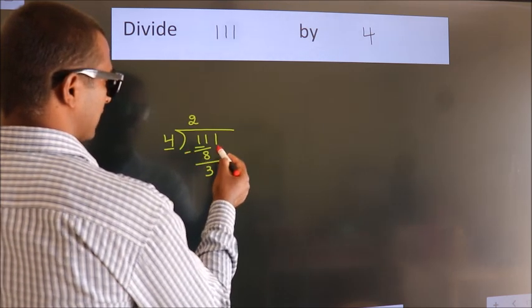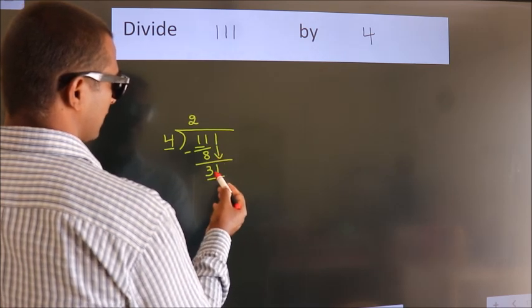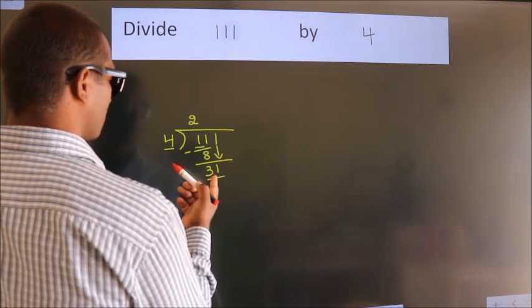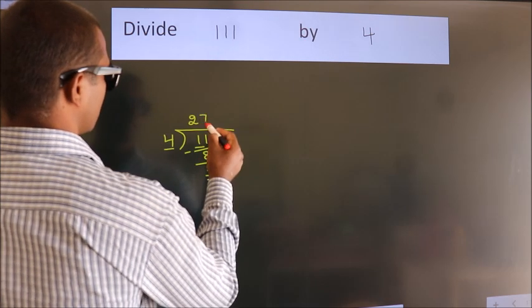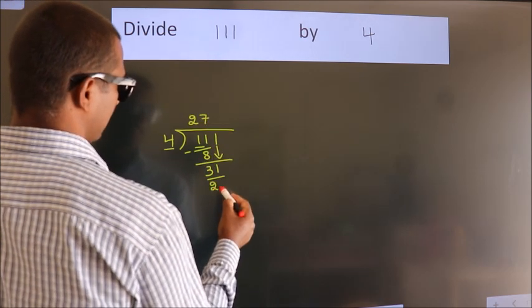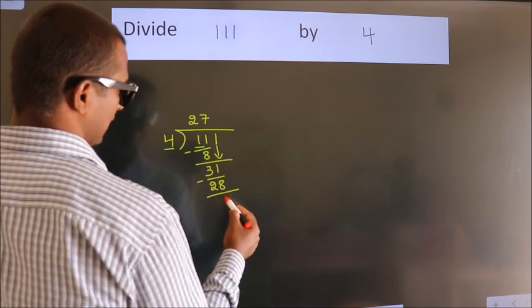After this, bring down the beside number. So 1 down. So 31. A number close to 31 in the 4 table is 4 times 7 equals 28. Now we subtract. We get 3.